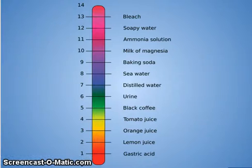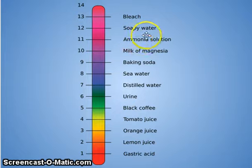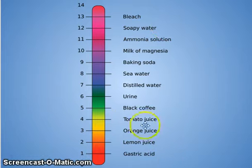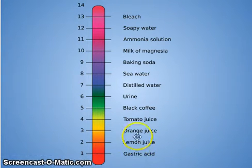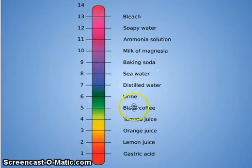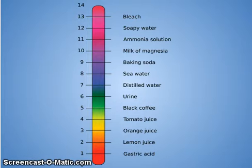Here's a visualization of the pH scale. Very basic things are near the top — bleach, soapy water, and ammonia are very basic. Down at the very acidic end you have gastric acid, stomach acid, lemon juice, and orange juice. In the middle, sea water, distilled water, and urine are all around neutral. Different things fall in and around their estimated number based on their hydrogen ion concentration.